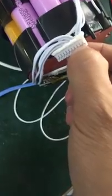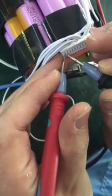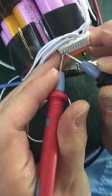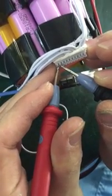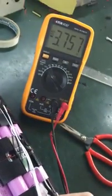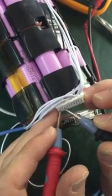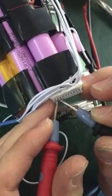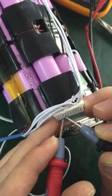Put the red pen on the first pin and the black pen on the second pin. You can see the voltage is 3.7 volts. The second is also 3.7, the third is also 3.7.